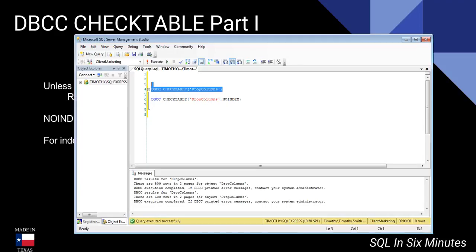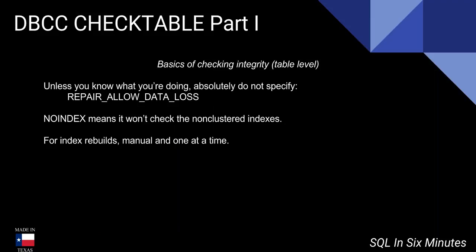This is an example of running DBCC CHECK TABLE with DROP_COLUMNS. And this right here is running DROP_COLUMNS NO_INDEX, which is going to exclude the non-clustered indexes. This is checking the integrity of a table.